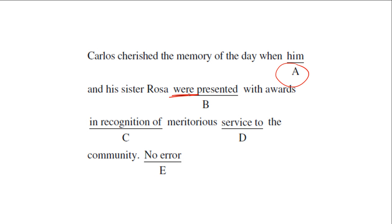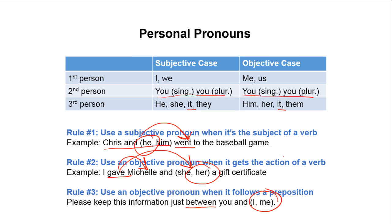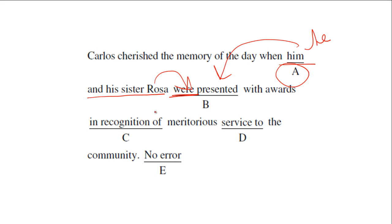Who is the subject of the verb 'were'? Who were presented? Rosa and this pronoun right here — these are the subject of the verb. Would you say 'him was presented,' or 'he was presented'? We need to use 'he.' Rule one says use a subjective pronoun when it's the subject of a verb. That pronoun is the subject of 'were,' but 'him' was being used — it needs to be 'he.' The corrected sentence: 'Carlos cherished the memory of the day when he and his sister Rosa were presented with awards in recognition of meritorious service to the community.'